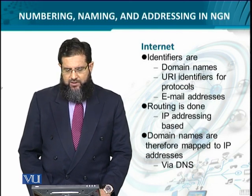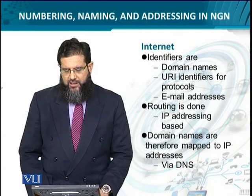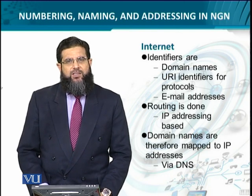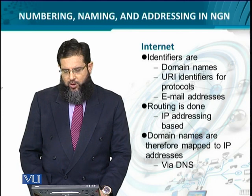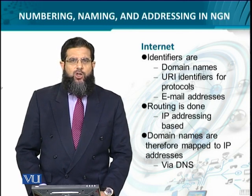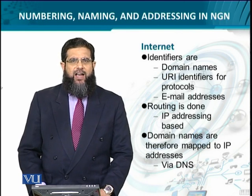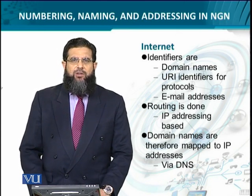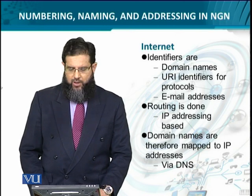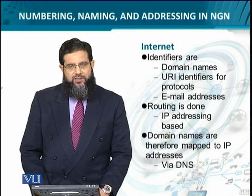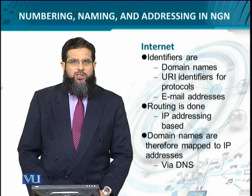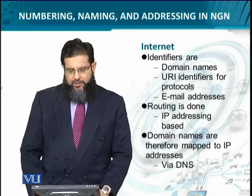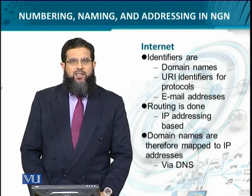When we look at the internet, identification is done through names — domain names, uniform resource identifiers which are based on the protocols used, and email addresses like ali@gmail.com. Here, routing is a different activity, which is based on IP addresses. So domain names are responsible for identification and IP addresses for routing. These two are combined together through a mechanism called DNS.